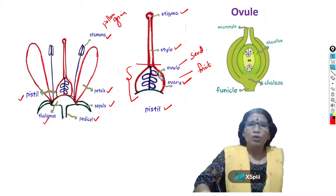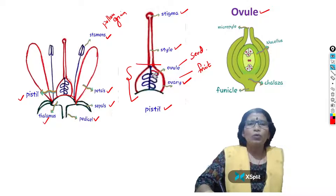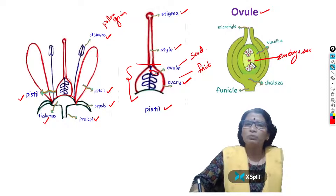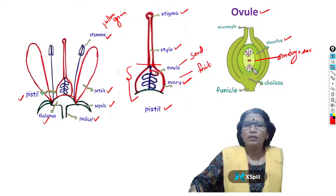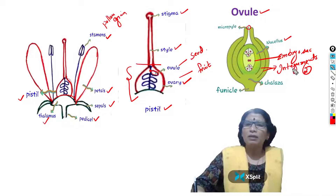Now I will explain the ovule. This is the clear diagram of the ovule where you can see all its parts. The stalk of the ovule is called the funicle. With the help of the funicle, the ovule is attached to a particular region inside the ovary called the placenta. Inside the ovule, the embryo sac is present. Around the embryo sac, a soft tissue called nucellus is present. The nucellus is surrounded and protected by two ovule walls called integuments, which leave a small pore called the micropyle.